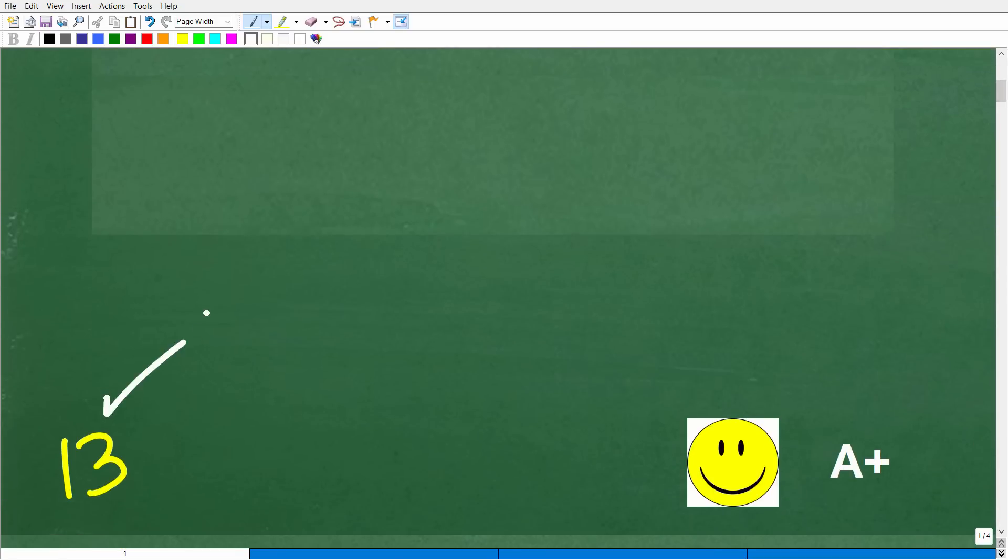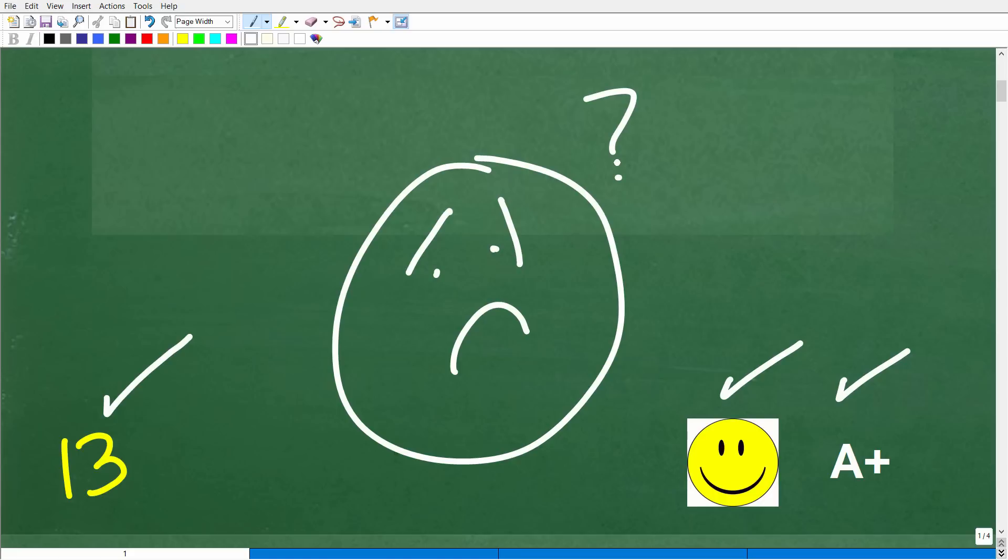The correct answer here is 13. Now, if you got this right and you did not use a calculator, well, you definitely get a happy face and an A+. And if you're like, hey, Mr. YouTube Math Man, it looks like I forgot my basic math. Can you help me understand? Well, I definitely can.